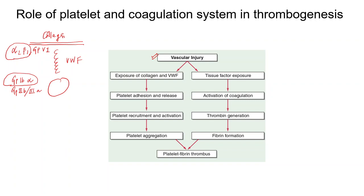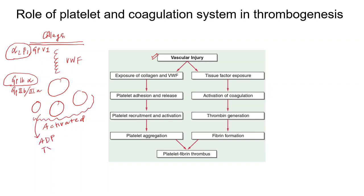Once the platelet is bound to the collagen, there is recruitment and activation of more platelets. These activated platelets release ADP — already stored in granules — and thromboxane A2, which is immediately synthesized and released into circulation. These mediators augment further platelet recruitment and activation.